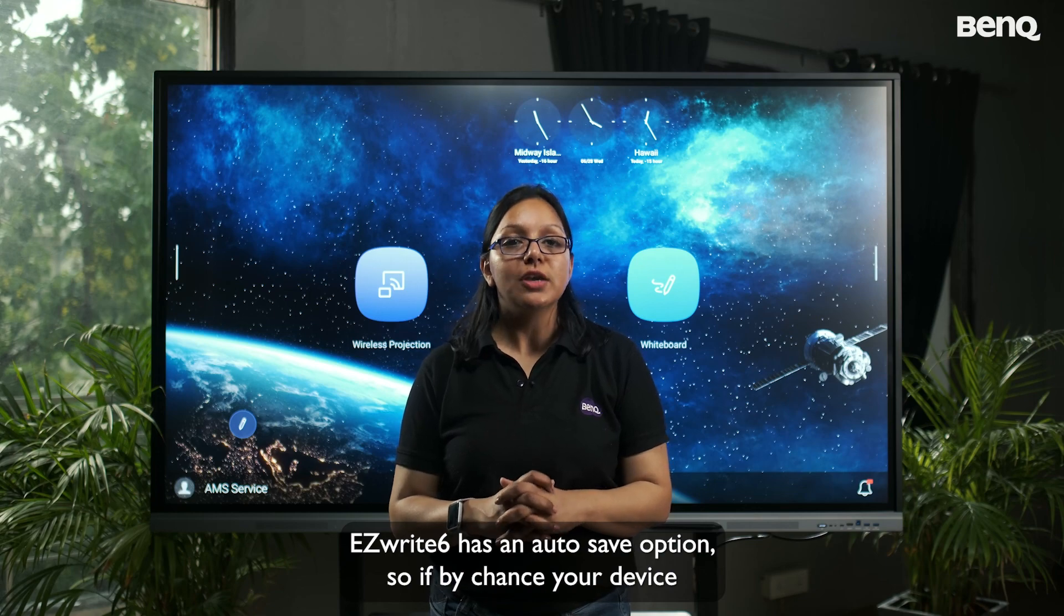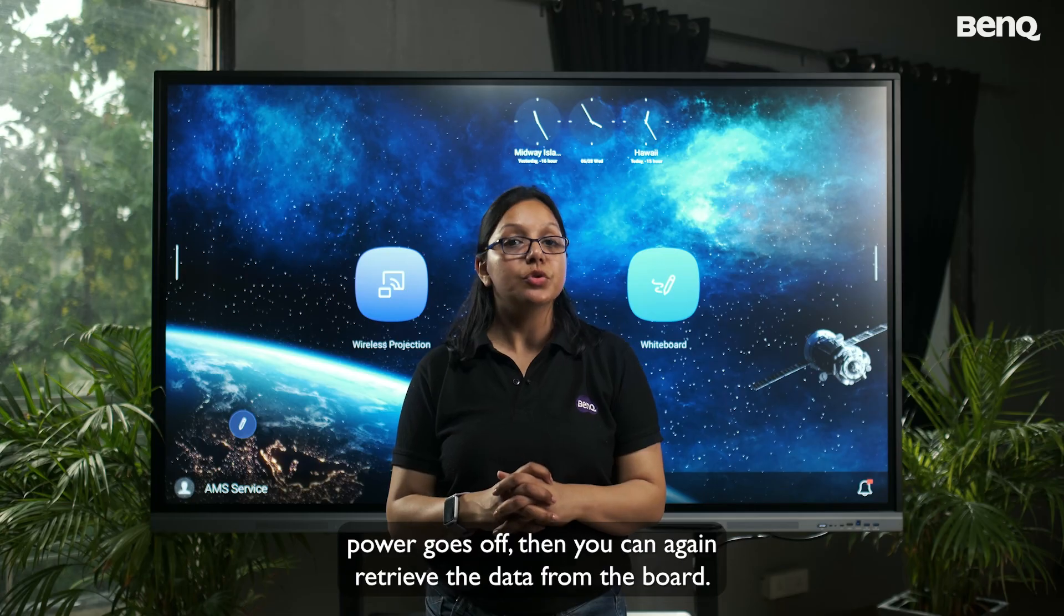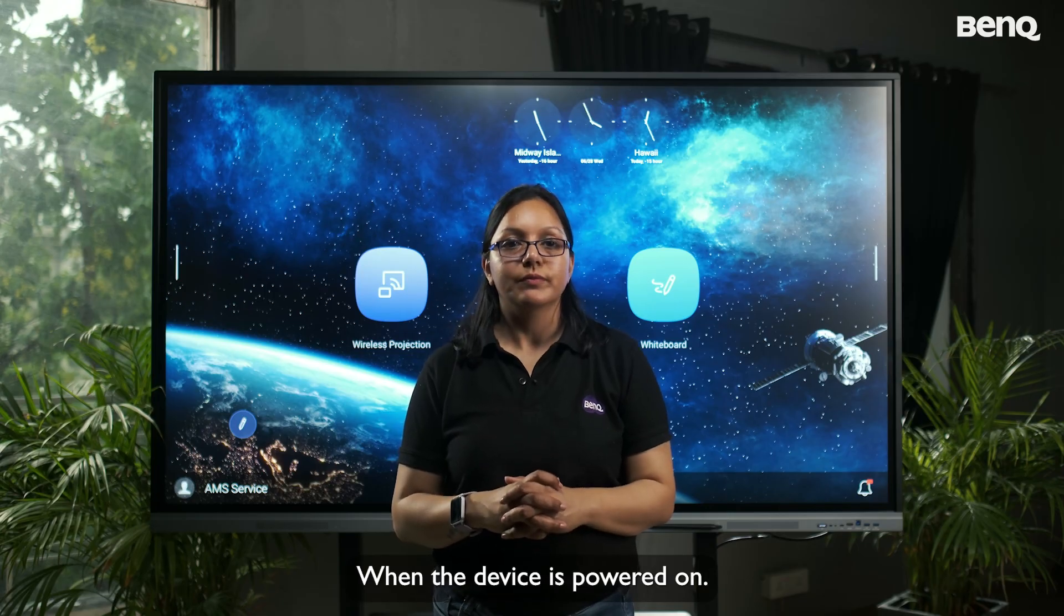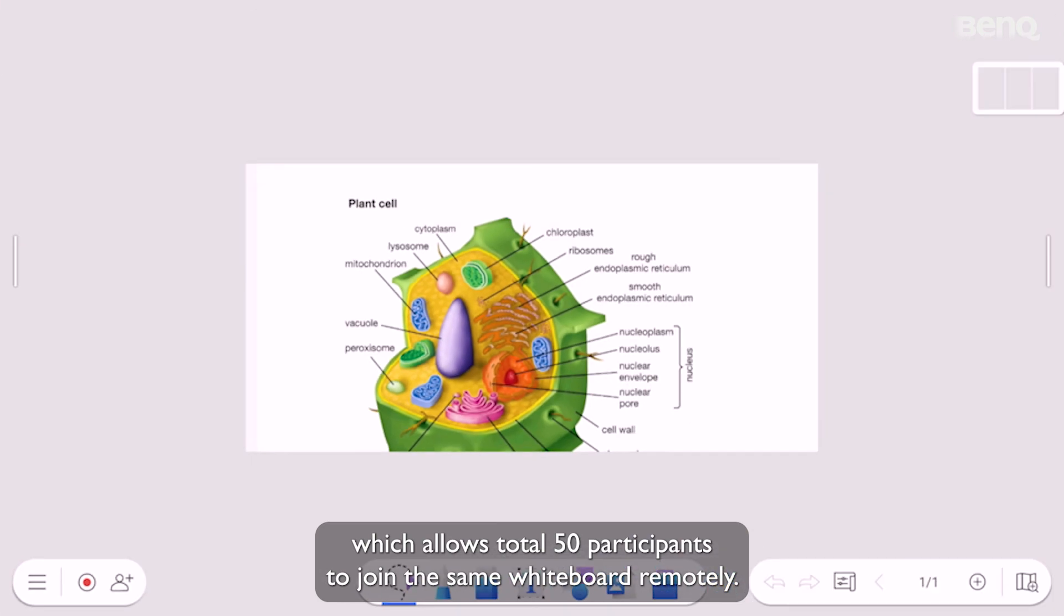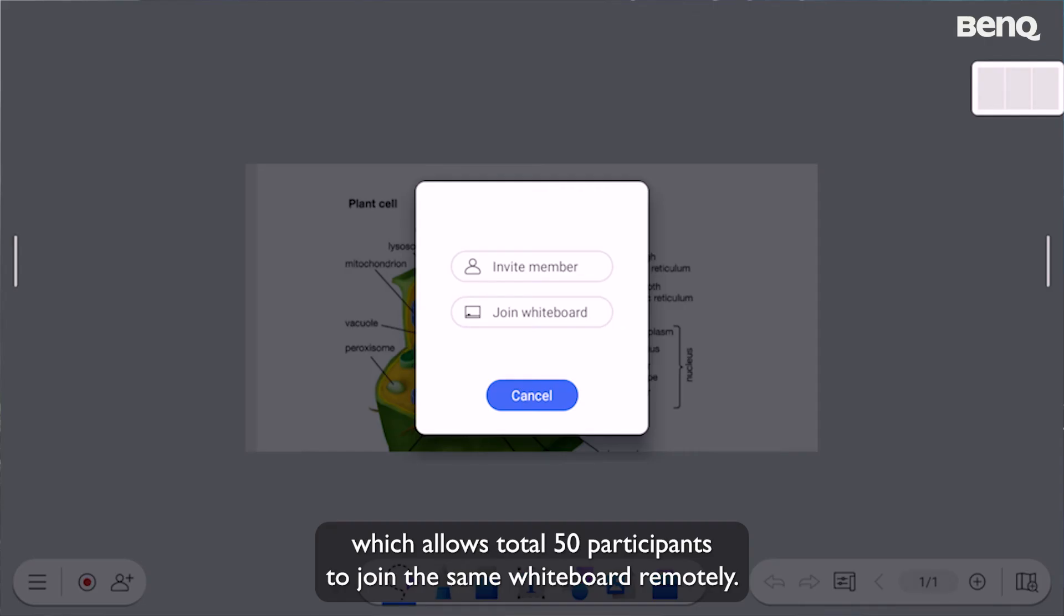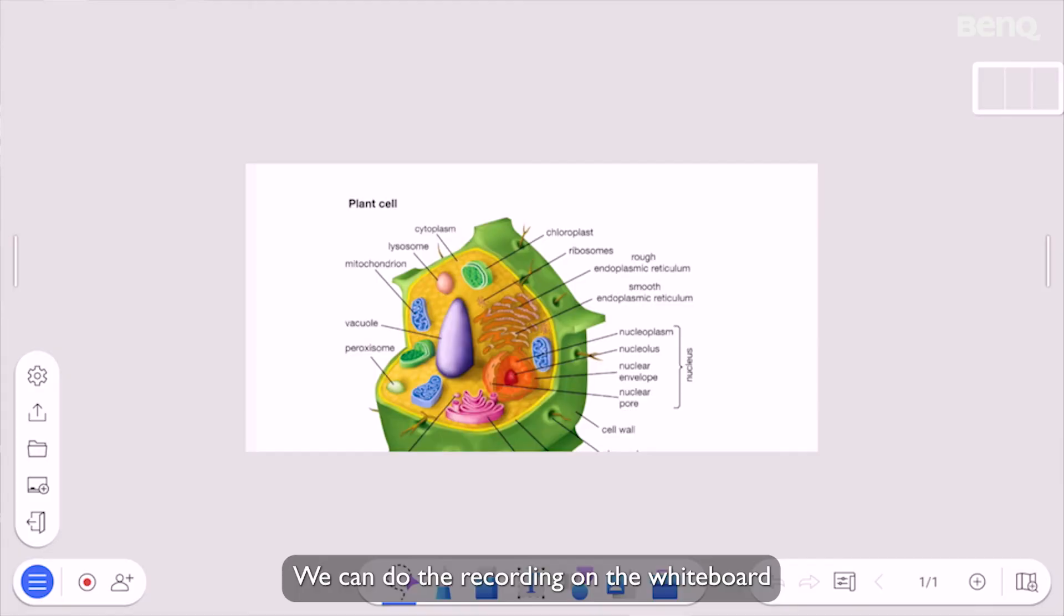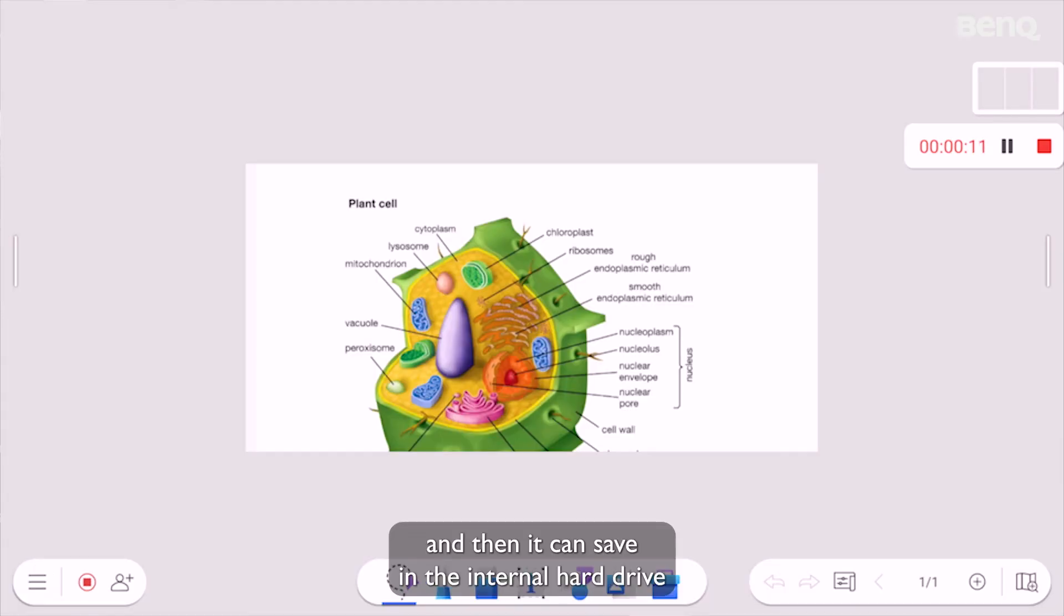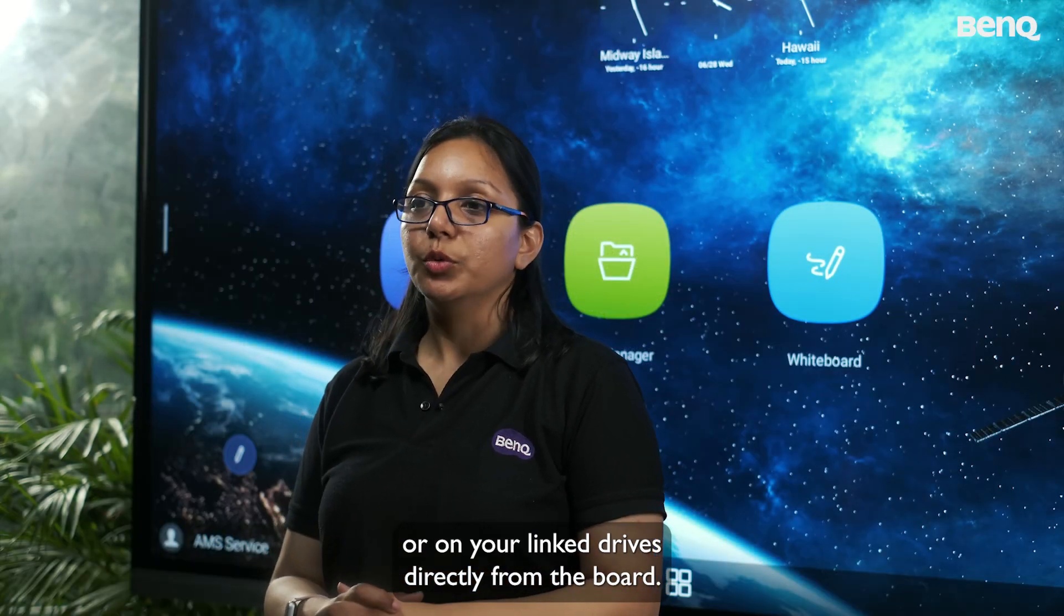EZWrite 6 has an auto save option. So if by chance your device power goes off, then you can again retrieve the data from the board when the device is powered on. This is the option of cloud whiteboarding, which allows total 50 participants to join the same whiteboard remotely. We can do the recording on the whiteboard and then it can save in the internal hard drive or on your linked drives directly from the board.